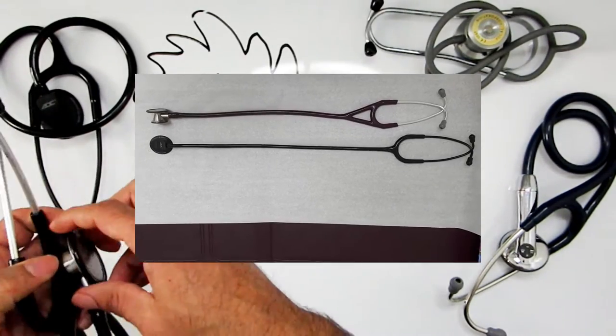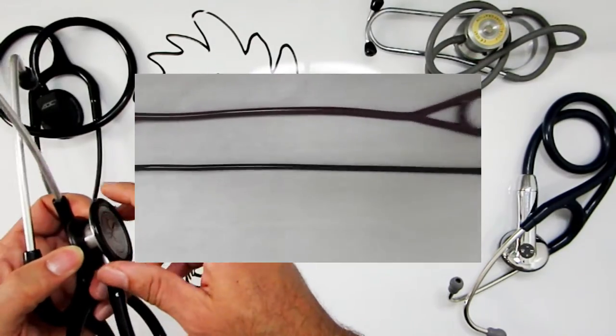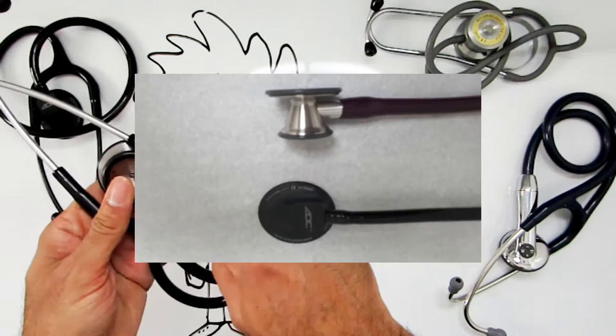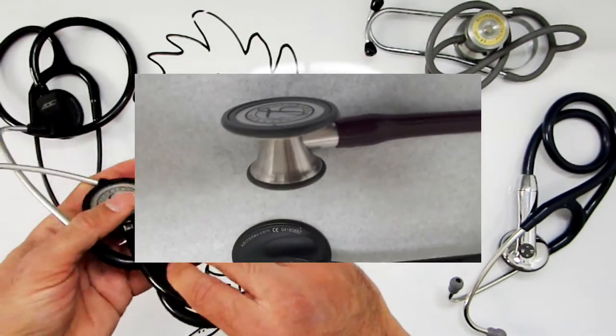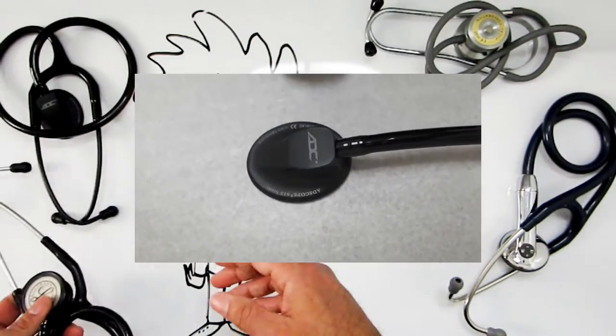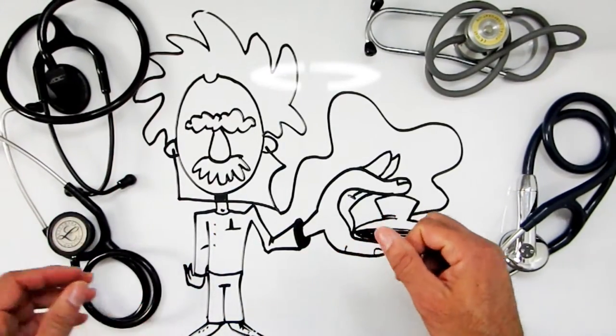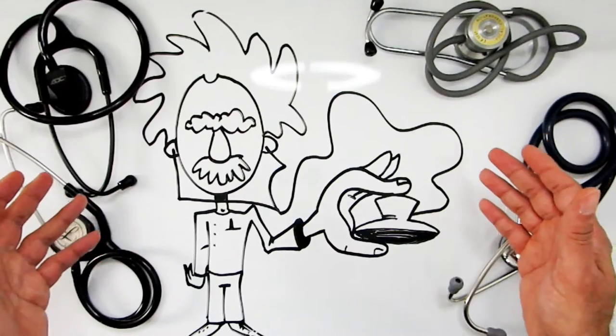A step up from this type, if your hearing isn't that acute, is the cardiology version. The cardiology version, put side to side, has a much larger diaphragm, a much larger bell, and also the conductive tubing is a lot thicker as well. The purpose for that is obviously if you're a cardiologist, you need to hear every little whisper that comes off of a heart.